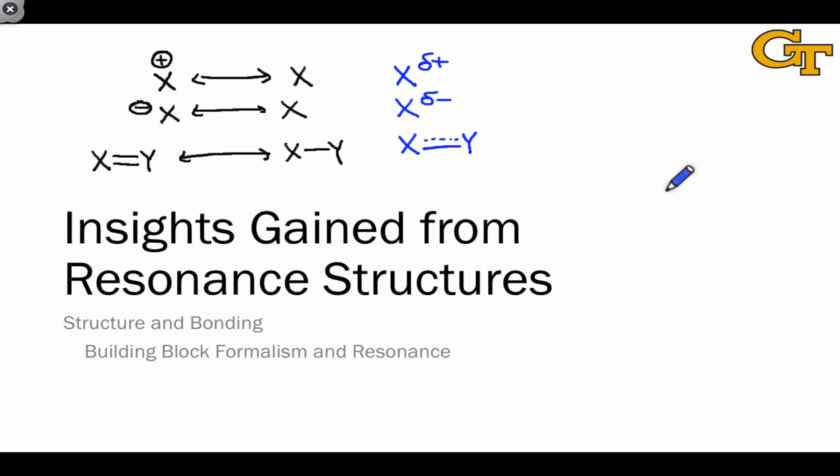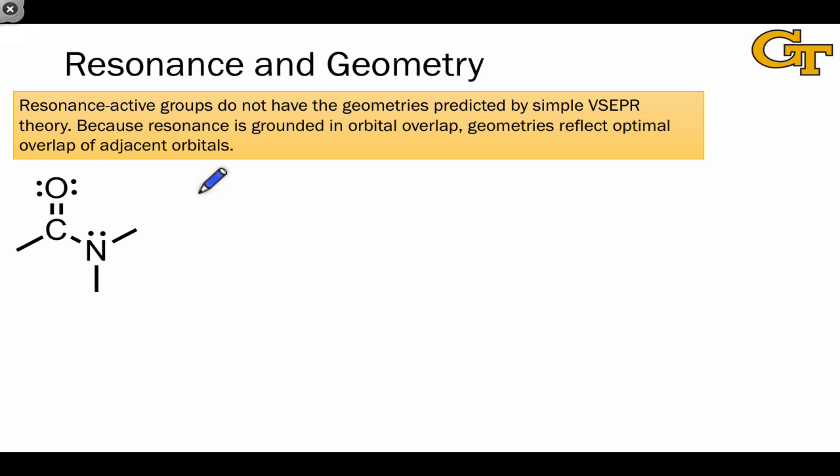We're going to deepen these ideas in the remainder of this video, focusing on geometry and reactivity. Resonance forces us to go beyond the simple VSEPR model of molecular geometry. For example, in the molecule shown here, we would predict based on the number of electron pair domains around this nitrogen atom that it has sp3 hybridization and that its electron group arrangement is tetrahedral, so that its geometry is trigonal pyramidal.